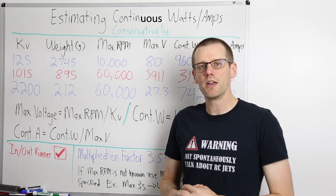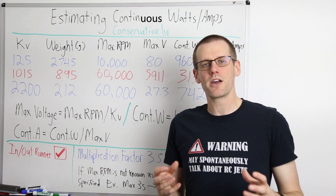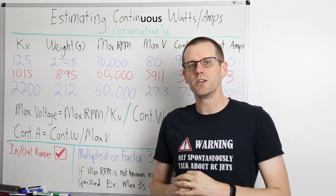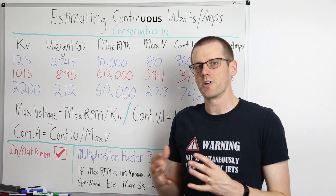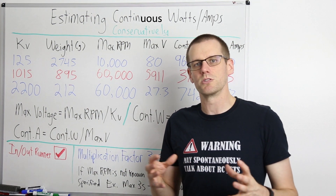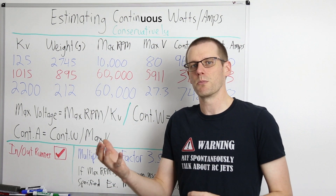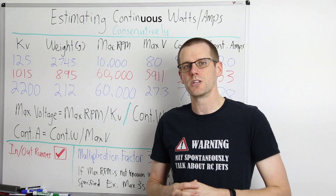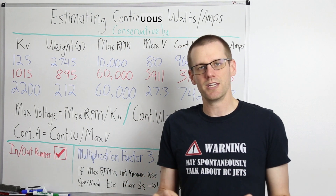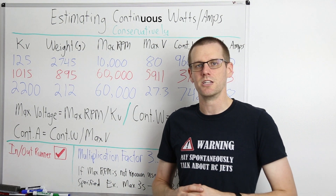Welcome back to another video. In this video I'm giving you my secret as to how I come up with continuous wattage and continuous current for a brushless motor when those two values are not known from the motor manufacturer's specification sheet. I use this whenever the motor manufacturer doesn't give me those values, or I don't know if I'm dealing with continuous power, continuous current, or peak power, peak current. I want to distinguish the difference because all my power systems are selected based off of continuous power — that's what I'm always looking for in most radio control setups operating in a continuous fashion.